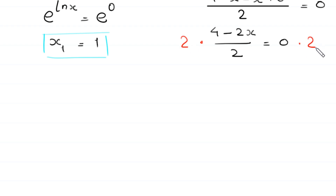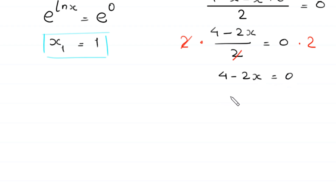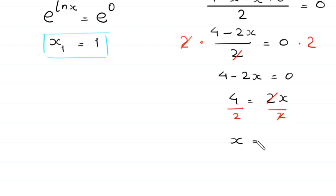Multiplying both sides by 2 gives 4 minus 2x equals 0. Moving negative 2x to the right side gives 4 equals 2x. Dividing both sides by 2, we get x equals 2. This is the second solution. So the two solutions are x equals 1 and x equals 2.